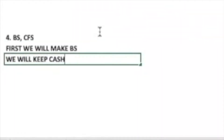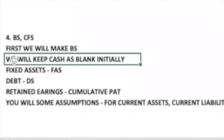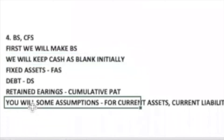We will keep cash as blank initially, because to fill in cash on the balance sheet we need the cash flow statement first. From the fixed asset schedule we will bring in fixed assets, and from the debt schedule we will bring in debt. Then we will go to current assets and current liabilities. Right now we are theoretically understanding the steps; when we make actual models you will understand more.